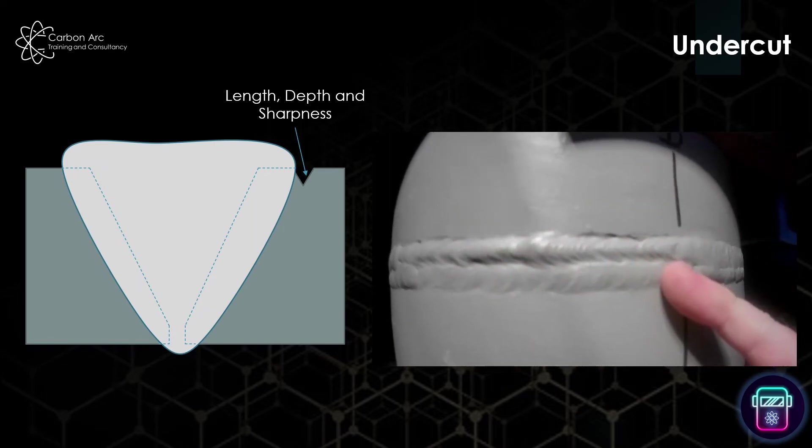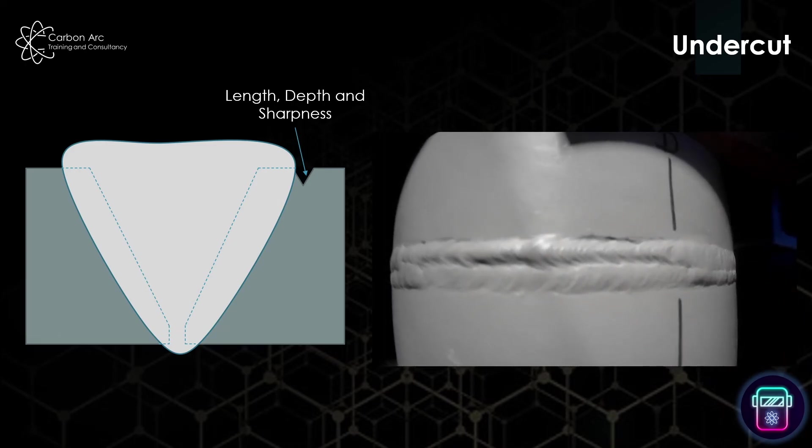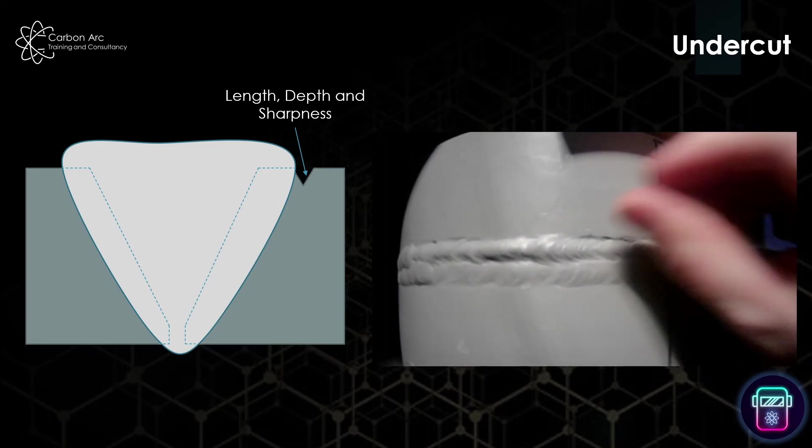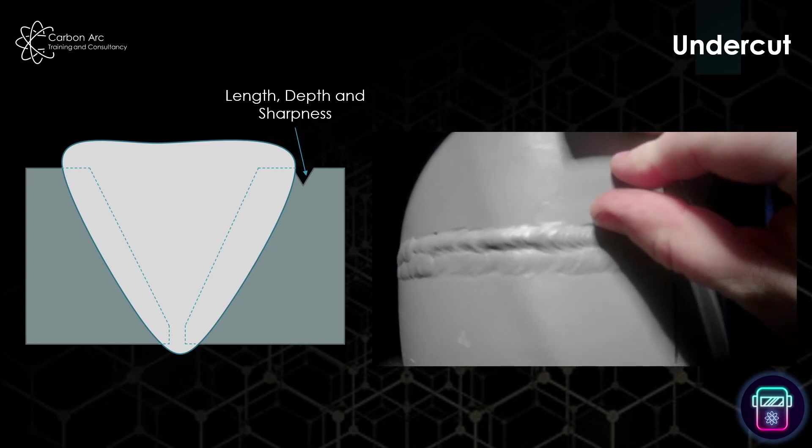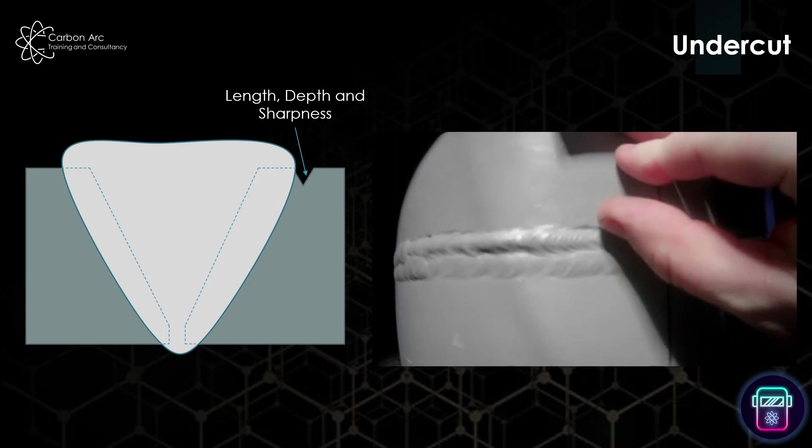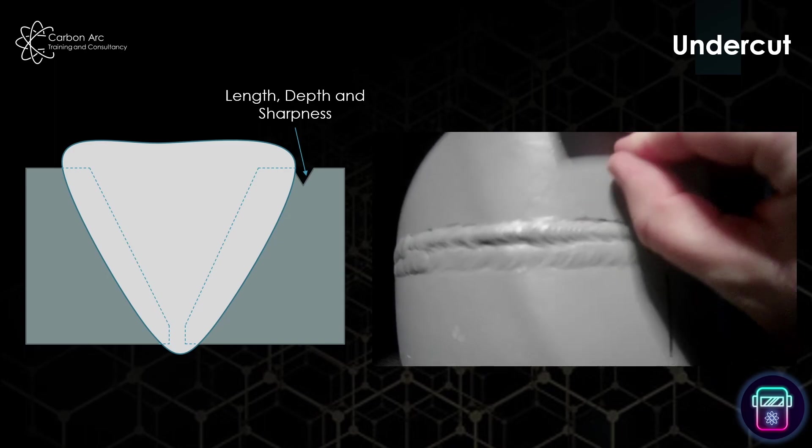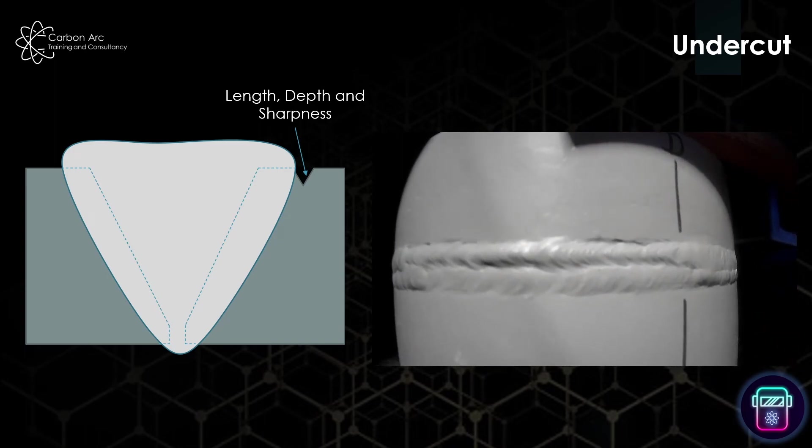The best way for sharpness is just to get your nail and see if you can click your nail into the defect. If you can, then we can see it's sharp.